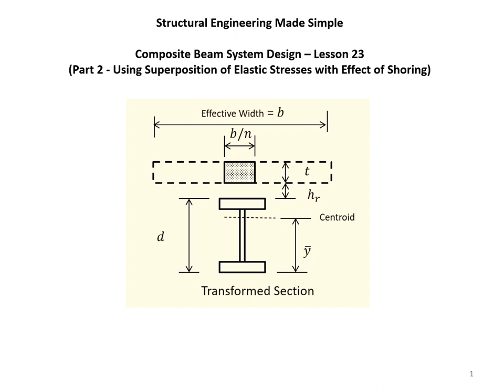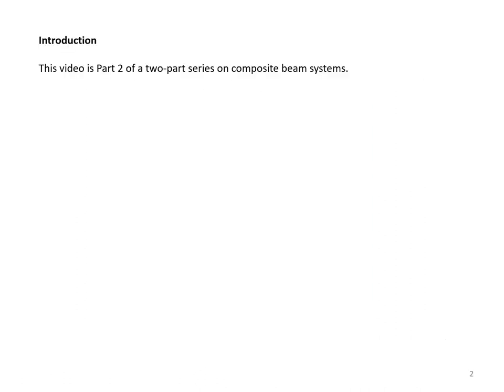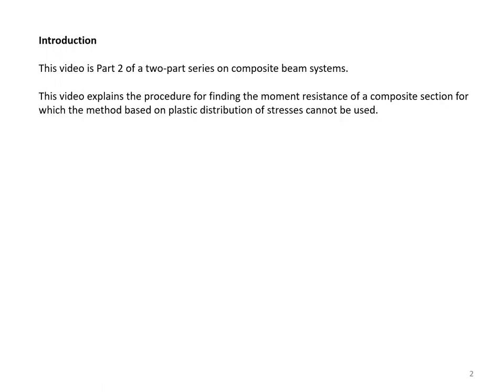In my Structural Engineer Made Simple series, today I'll continue the discussion on composite beam system design. This is part two of a two-part series and focuses on using superposition of elastic stresses with effect of shoring in design. This video explains the procedure for finding the moment resistance of a composite section for which the method based on plastic distribution of stresses cannot be used.